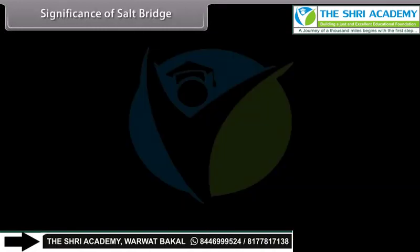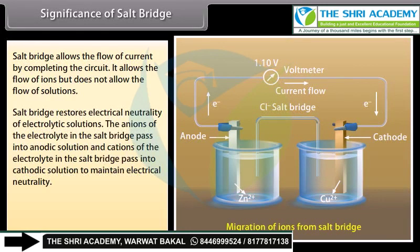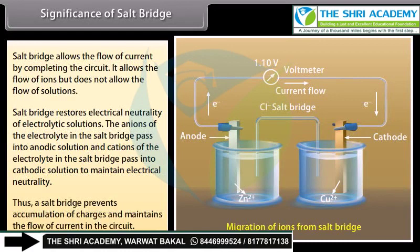Significance of Salt Bridge: The salt bridge allows the flow of current by completing the circuit. It allows the flow of ions but does not allow the flow of solutions. The salt bridge restores electrical neutrality of electrolytic solutions — anions of the electrolyte pass into the anodic solution and cations pass into the cathodic solution to maintain electrical neutrality. Thus, a salt bridge prevents accumulation of charges and maintains the flow of current in the circuit.